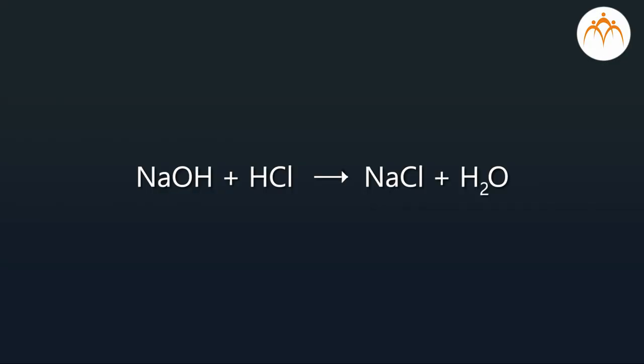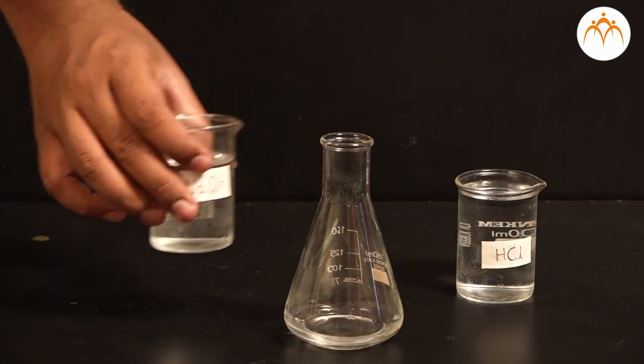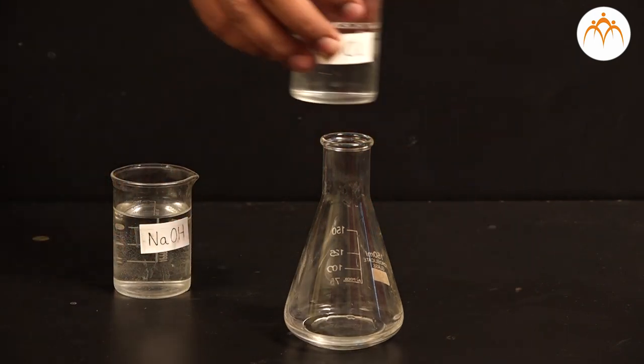A word equation can be written in a condensed form by using chemical formula. For example, NaOH plus HCl gives NaCl plus H2O. The ionic bonds in NaOH and HCl break and bonds form in NaCl and H2O during the chemical reaction.